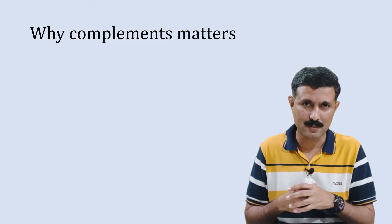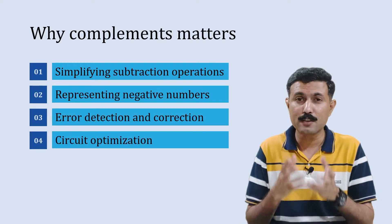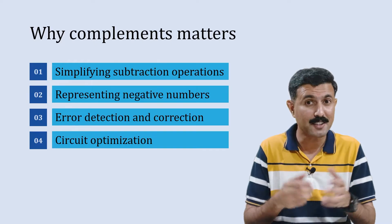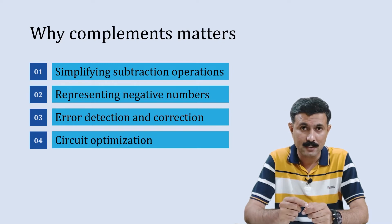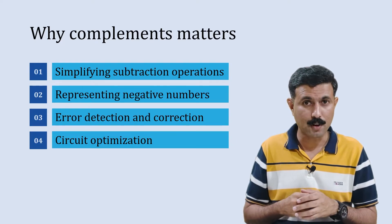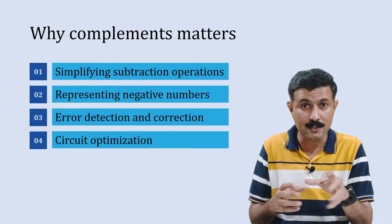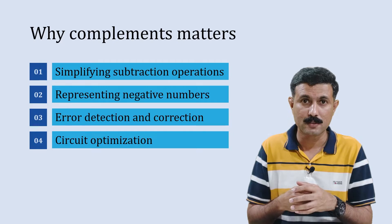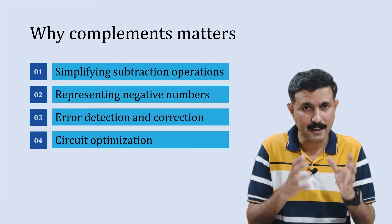The first thing we are going to understand is why complement matters. Basically, it's useful in simplifying the subtraction operation. The 2's complement is commonly used to represent negative numbers in digital electronics. Complements are also used in error detection and correction techniques like the checksum method and cyclic redundancy checks. Understanding complements helps in optimizing circuits by simplifying logic for addition and subtraction operations.